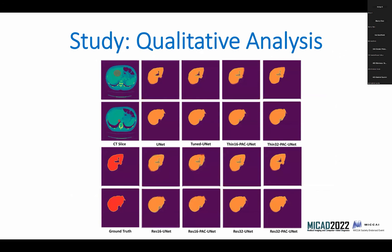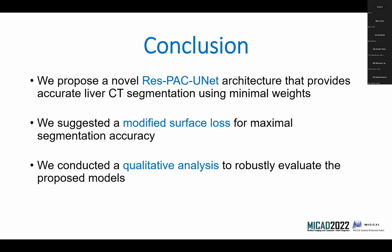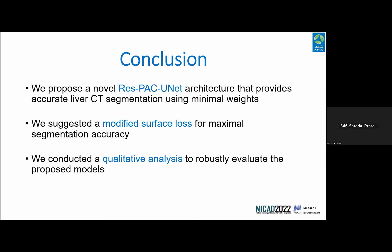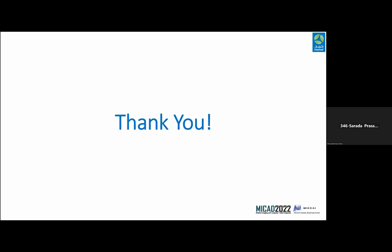We also conducted a qualitative analysis study comparing the performance of several networks with our proposed network. We found that the RES32-PAC unit produced the most accurate segmentation masks while being the lightest and most computationally efficient model among all compared models. To conclude, we propose a residual PAC unit architecture that provides accurate liver segmentation with minimal weights due to the tuned backbone and efficient pyramid atrous convolution module. We also suggest a modified surface loss function combining dice loss and boundary loss for maximum segmentation accuracy. Finally, qualitative analysis robustly confirms that the proposed model gives the desired results. Thank you — I'll be happy to answer any questions.